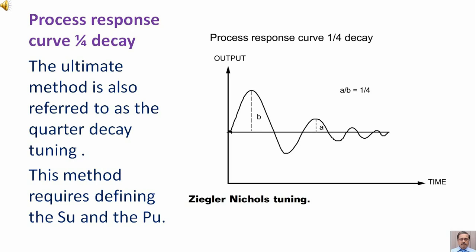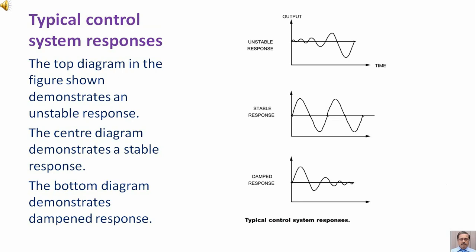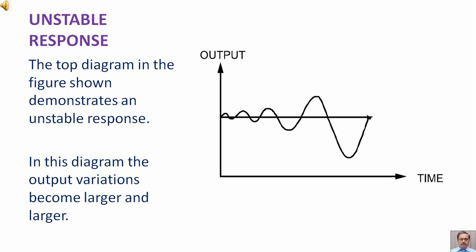Typical control system responses: The top diagram in the figure shown demonstrates an unstable response. In this diagram, the output variations become larger and larger.